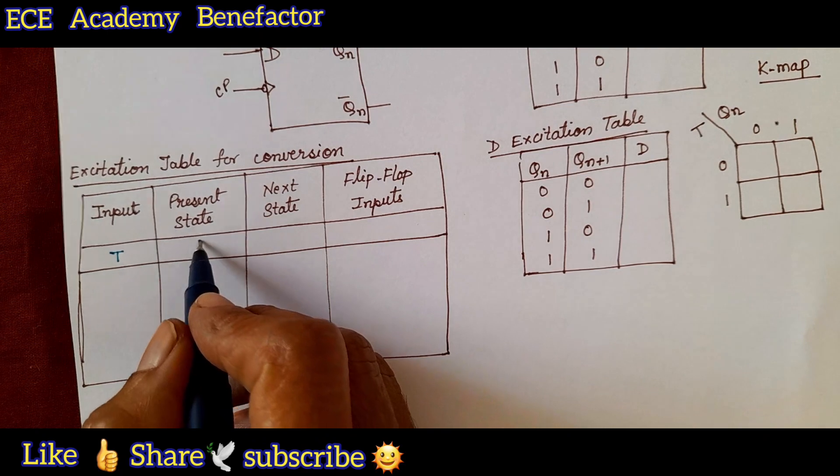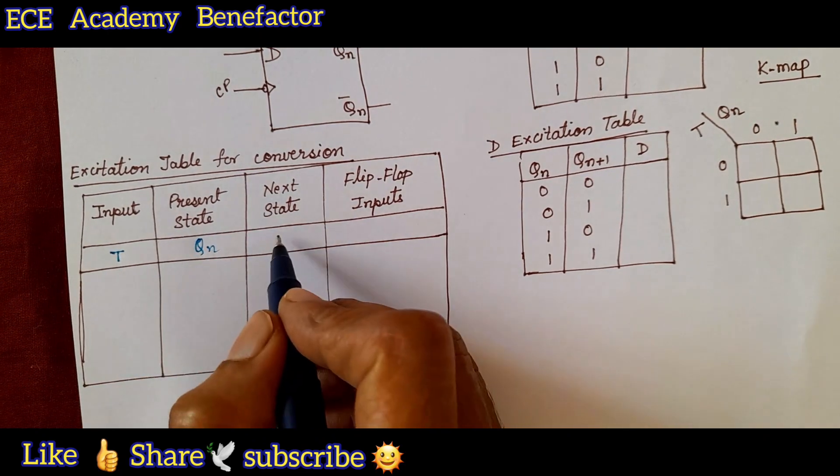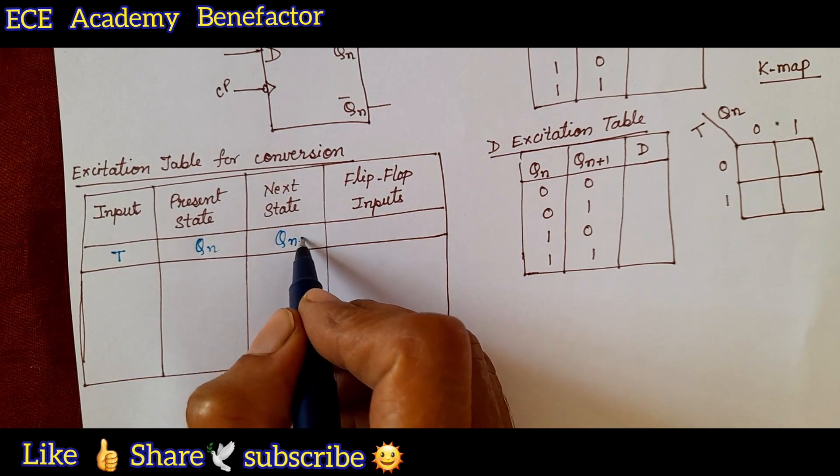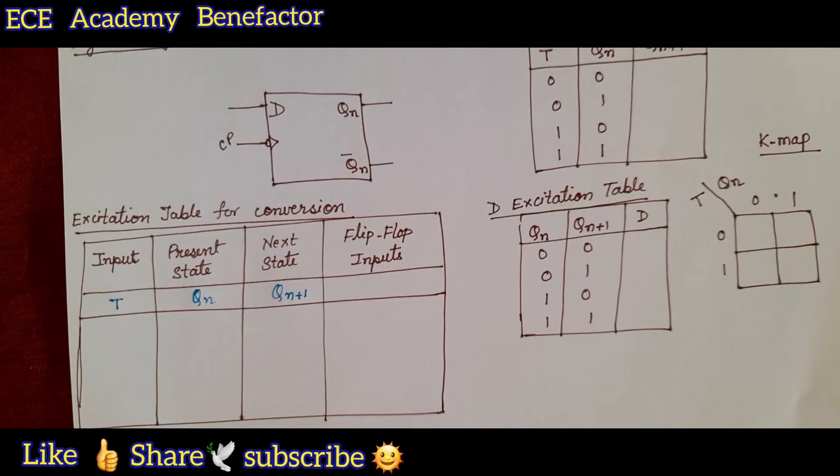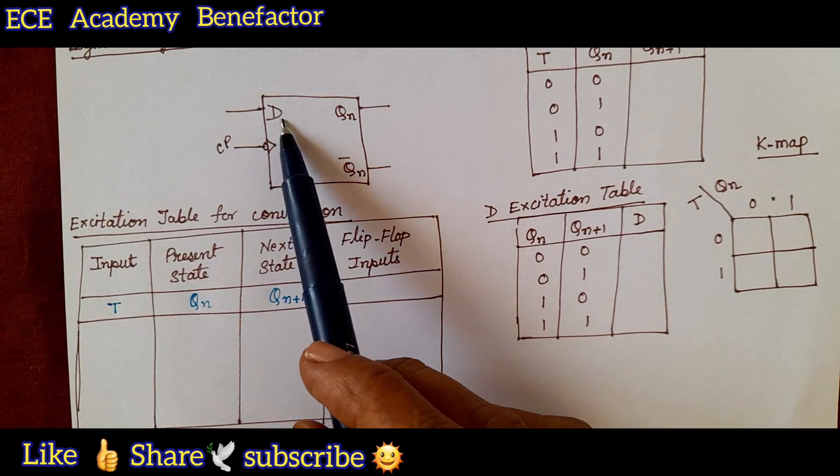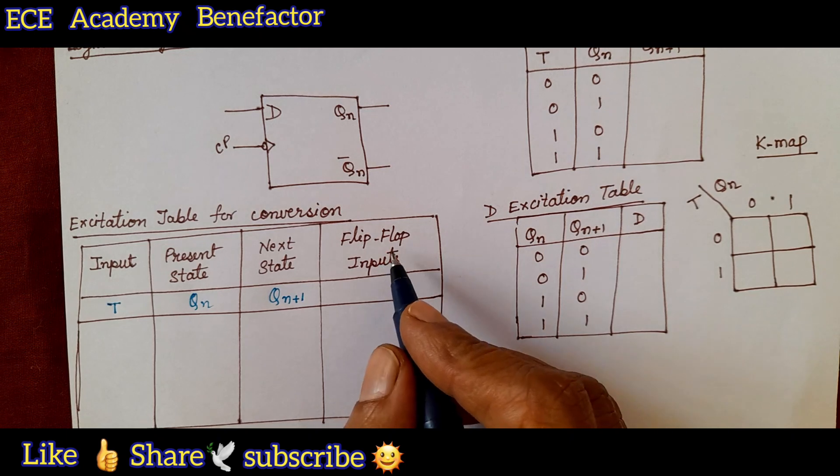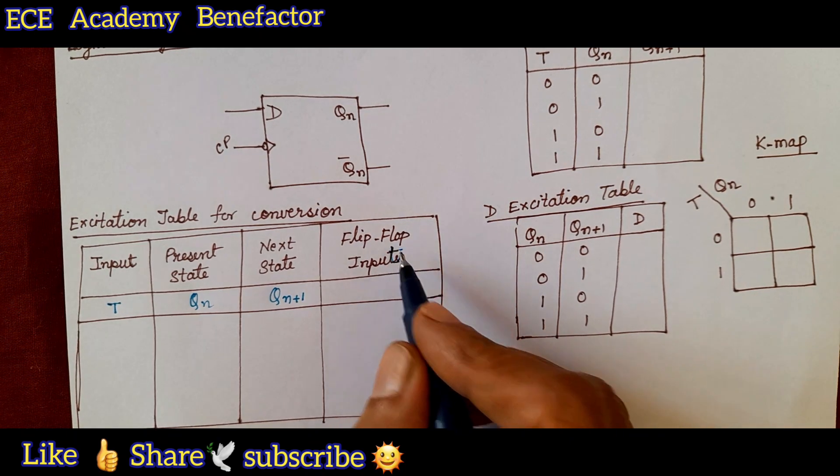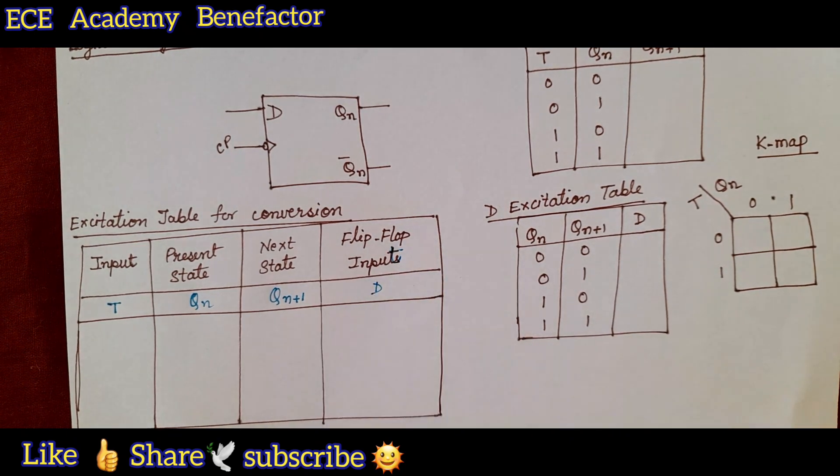Present state is Q n, next state is Q n plus 1 and what is the flip-flop input? Flip-flop input is D. Here it is a single input, so we can write it as input D.